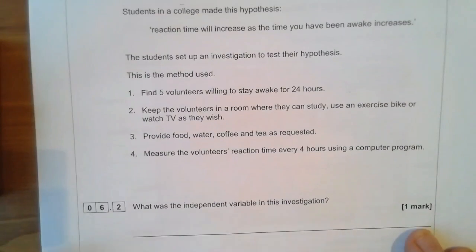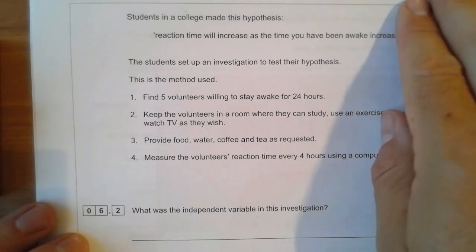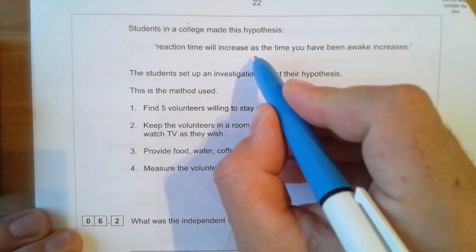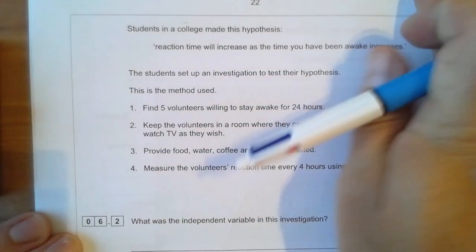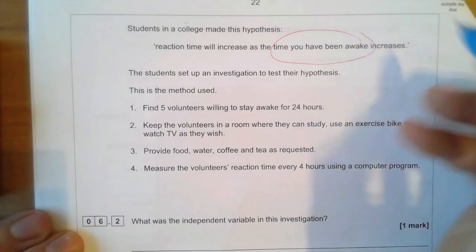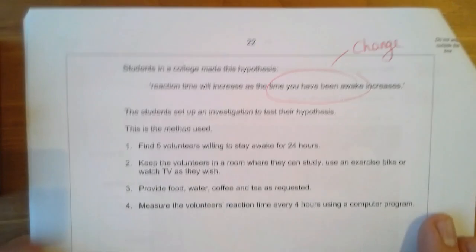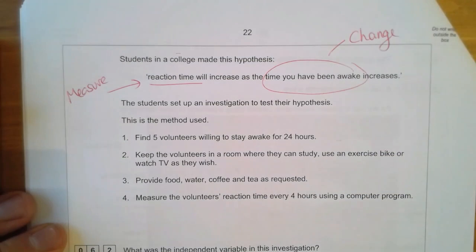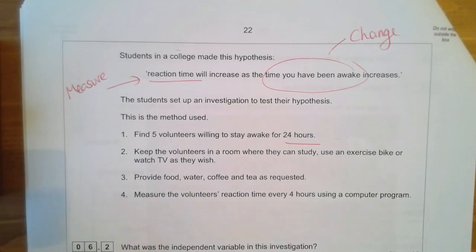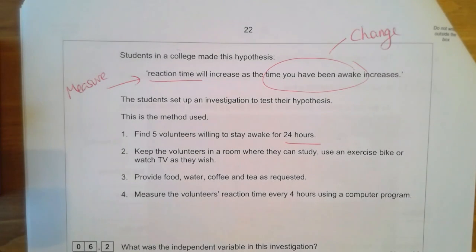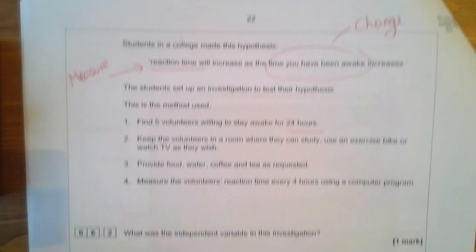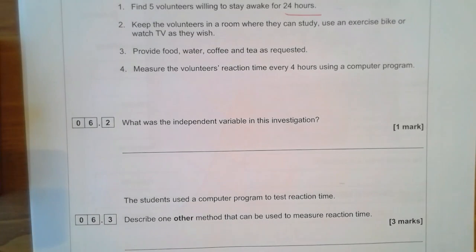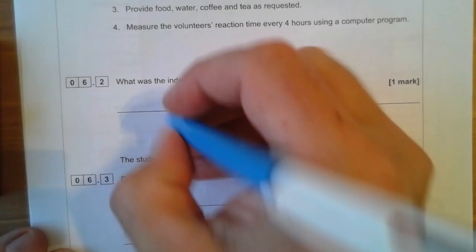Students made the hypothesis: reaction time will increase as the time you've been awake increases. Looking at that statement, they're going to change the time people have been awake and measure reaction time. They used five volunteers who stayed awake for 24 hours — that's a control variable, something they've kept the same. They kept volunteers in a room where they could study, use an exercise bike, or watch television, and provided food, water, and coffee as requested. They measured volunteers' reaction time every four hours using a computer program. The independent variable is the thing you change — from the hypothesis, it's the time awake.